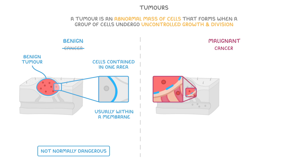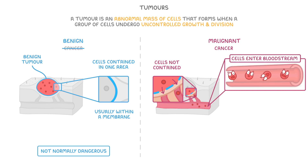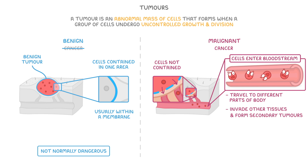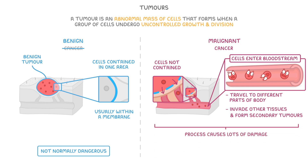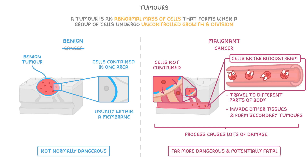However, in a malignant tumour, the abnormal cells are not contained by the membrane. Instead, the cells can enter the bloodstream and then travel to different parts of the body. They are then able to invade other tissues and form secondary tumours. This process causes lots of damage to our body, making malignant tumours far more dangerous and potentially fatal, which is why we classify them as cancer.